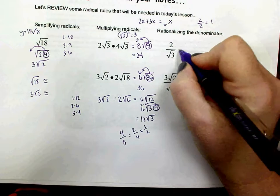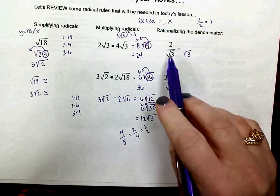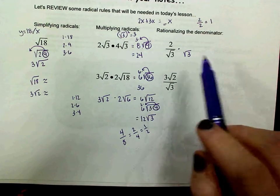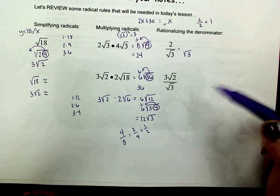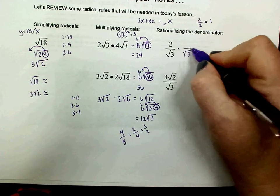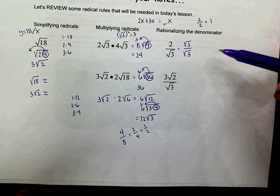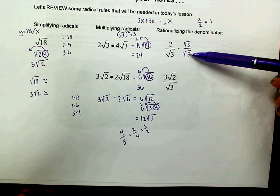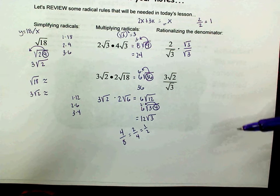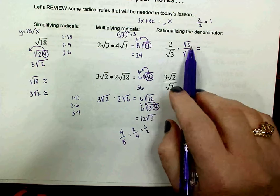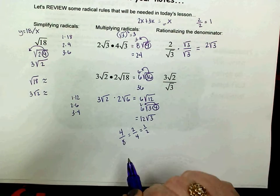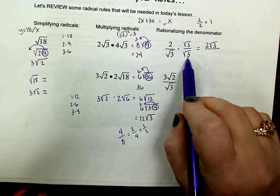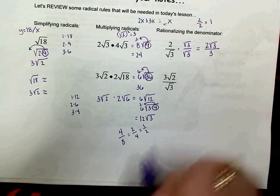I'm going to multiply the denominator by the square root of 3, which will get rid of that radical and leave me with just 3. But to keep the same value, I also multiply the numerator by the square root of 3 — so I'm really just multiplying by 1, since square root of 3 over square root of 3 is 1. In the numerator, the 2 is outside the radical and the 3 is inside, so I write that as 2 square roots of 3. In the denominator, the square root of 3 times the square root of 3 is the square root of 9, which is simply 3. It no longer has a radical in the denominator.